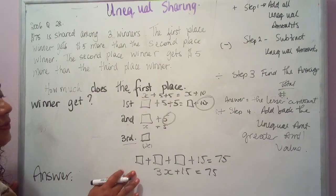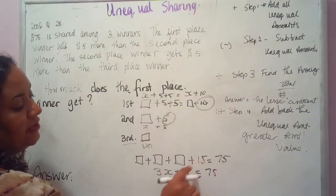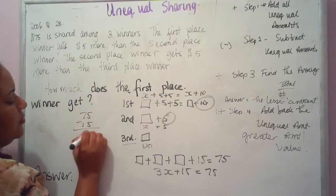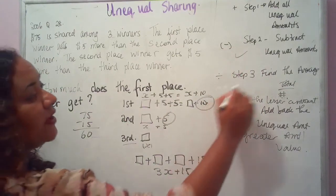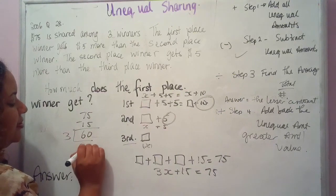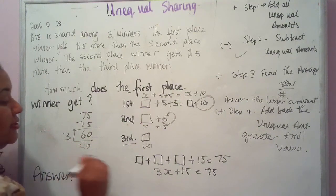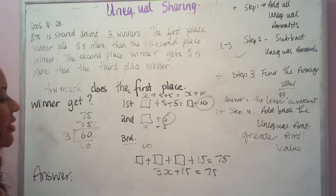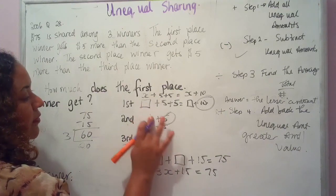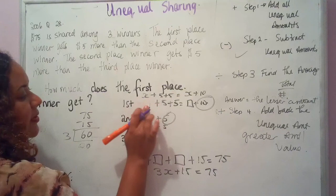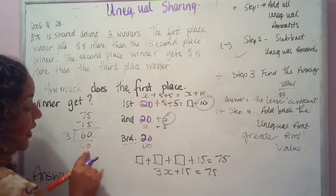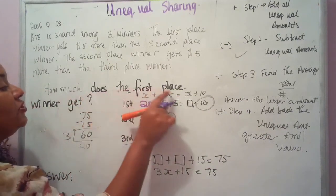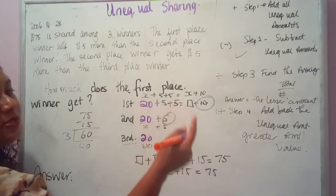Step two: subtract the unequal amounts — 75 minus 15 = 60. Step three: find the average — divide by 3 = 20. So x = 20, meaning each base value is 20. Now substituting: third place = 20, second place = 20 + 5 = 25, first place = 20 + 5 + 5 = 20 + 10 = 30. The question asks for the first place winner, who gets $30.